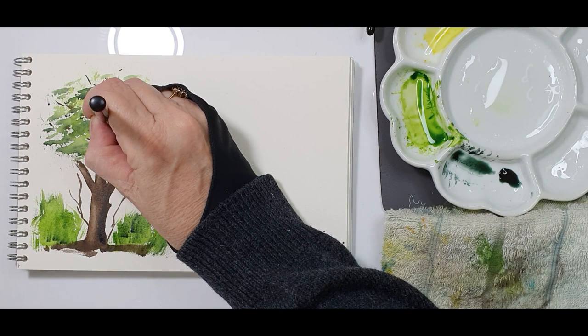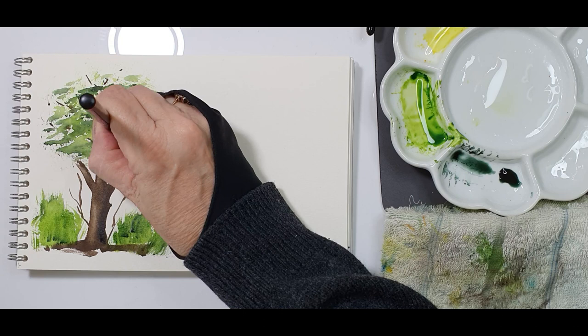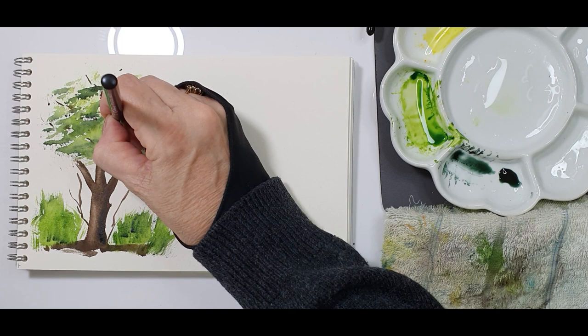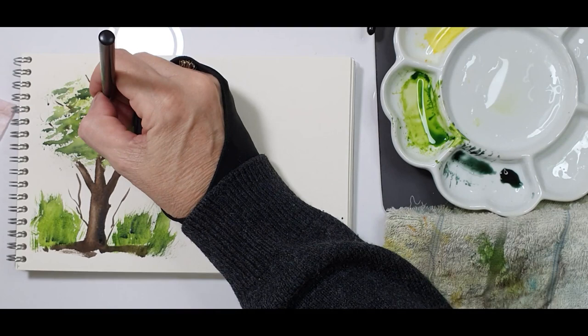To create the illusion of sun shining through your tree you can use the bouquet effect and very lightly make your circles in the foliage. Do not press too hard because you will damage the paper. Very lightly draw the little circles and dab out the excess water.